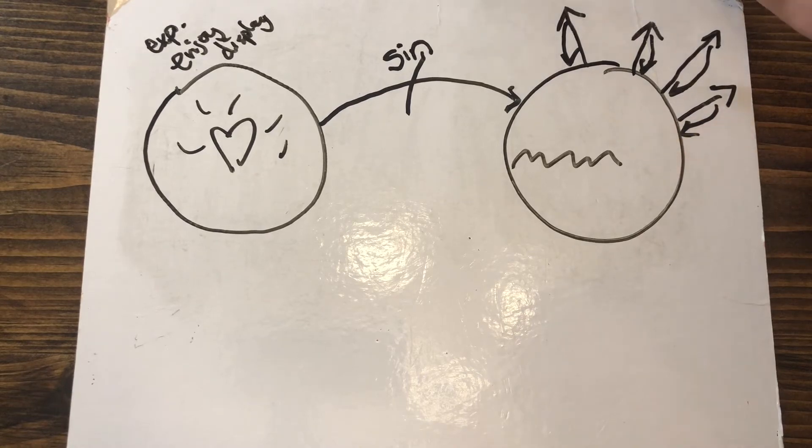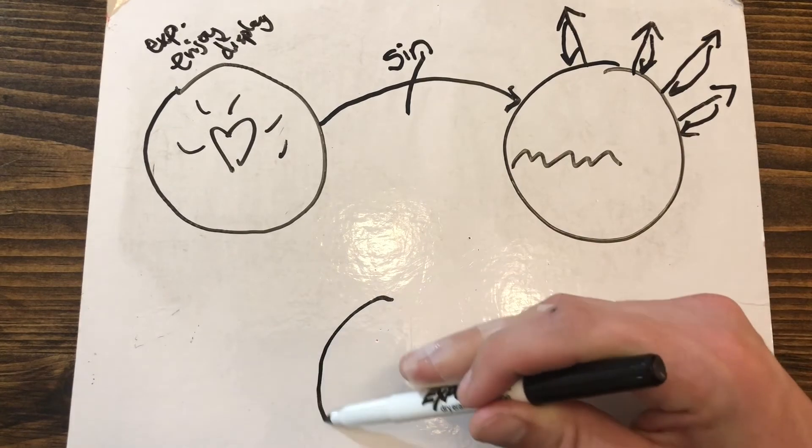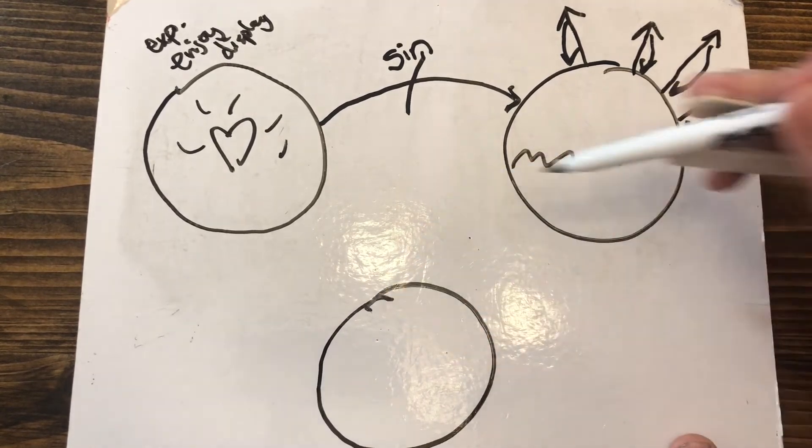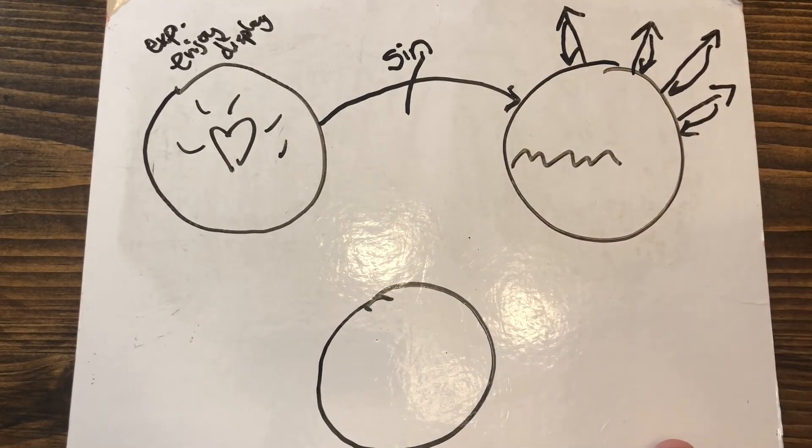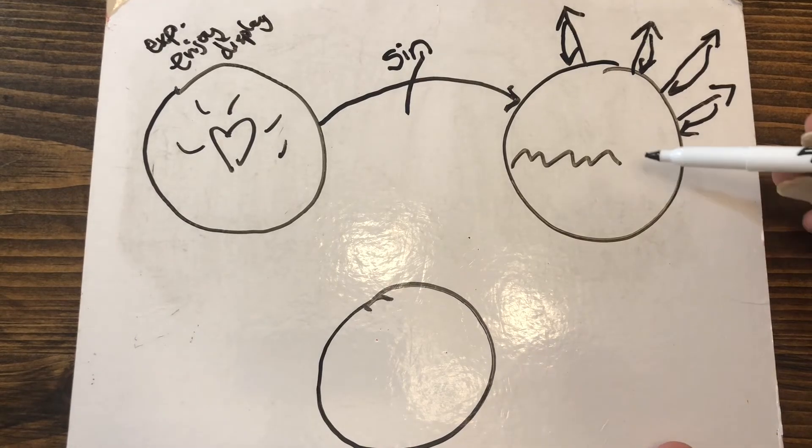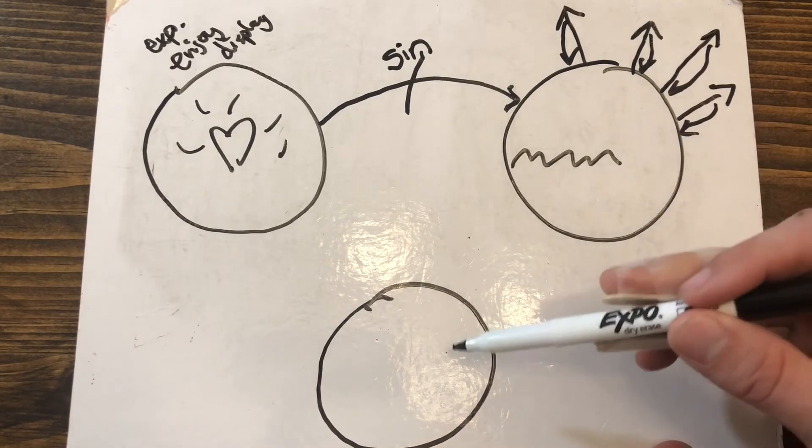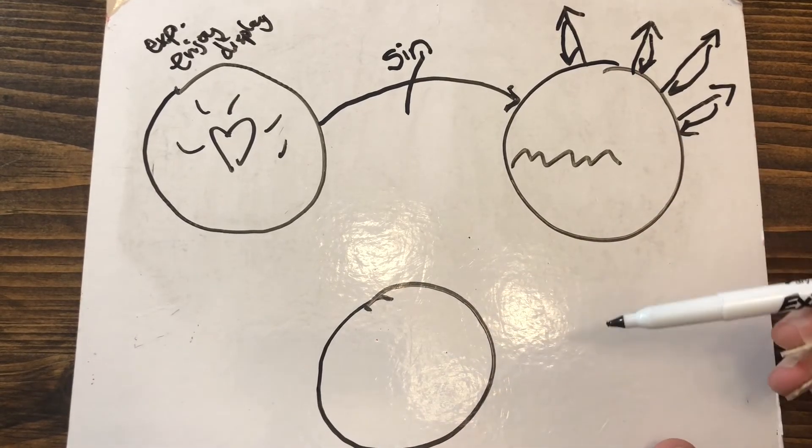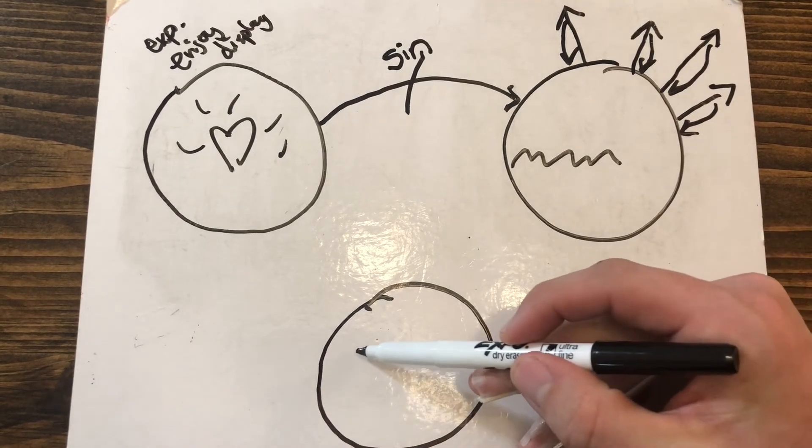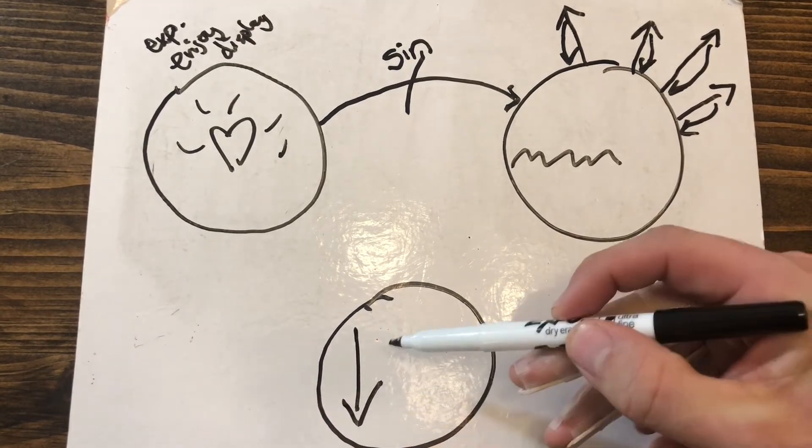And that's where this third circle comes into play. Now how do we get from this to this? Well, we know about Jesus that he came. This was God who came into the world.